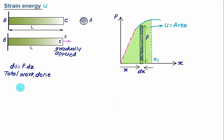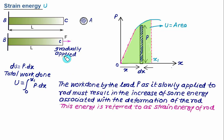The total work done is obtained by integrating dU. Total strain energy U equals the integral from 0 to x₁ of P dx. The work done by load P as it is applied gradually to the rod results in an increase in energy associated with the deformation, and this energy is called the strain energy. Total work done equals total strain energy.